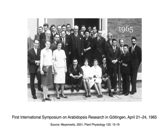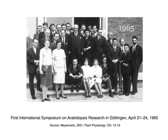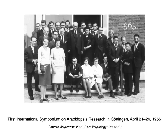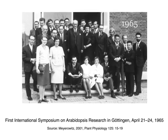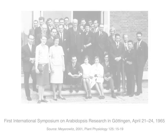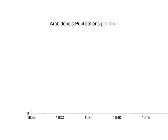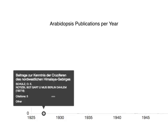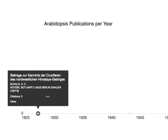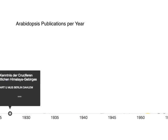This year marks the 50th anniversary of the first international conference on Arabidopsis research held in Göttingen, Germany. The first cited Arabidopsis paper in the Thomson Reuters Biosys database was from 1927 by O.E. Schultz on crucifers found in mountains, entitled Beiträge zur Kenntnis der Kruzifern des nordwestlichen Himalayagebirges.